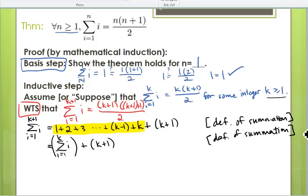Okay, but if we look around our screen here and see what we have available to work with, in our assumption we said we are assuming that the sum from i equals one to k of i is equal to k times k plus one over two. So we can safely plug this in because we're assuming that is true as part of our proof. So let's plug that in.